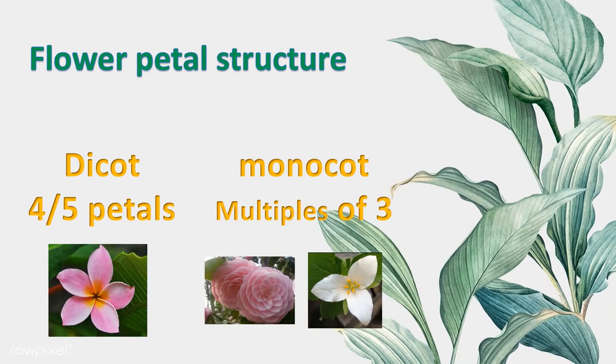The flower petal structure: dicots have four or five petals, while monocots have multiples of three petals — three, six, or more.